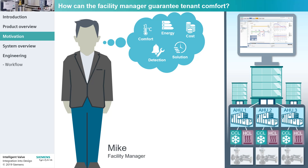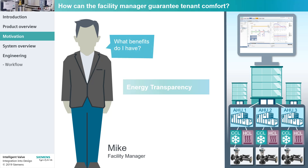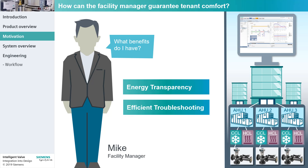Let's take a look at Building 1. Building 1 has an HVAC system consisting of three air handling units. Each cooling coil has an intelligent valve installed. By integrating the intelligent valves into Dizigo, Mike can benefit from energy transparency and efficient troubleshooting.